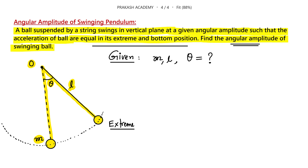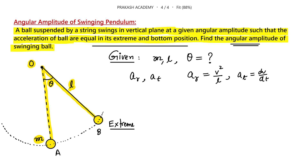How will you solve this problem? When a bob is moving in a circle, there are two components of acceleration: radial acceleration and tangential acceleration. We consider two positions — position A, the lowest position, and position B, the extreme position. Radial acceleration is V²/R, where R = L, and tangential acceleration is dV/dt, which equals the force in the tangential direction divided by the total mass.